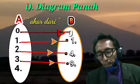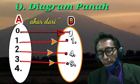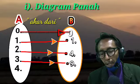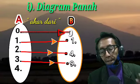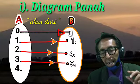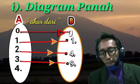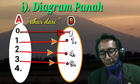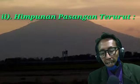Kita mulai dari cara diagram panah. Perhatikan pada tayangan. Kita buat dua himpunan: himpunan A dengan anggota 0, 1, 2, 3, 4 dan himpunan B dengan anggota 0, 1, 4, dan 9. Karena relasinya adalah 'akar dari', maka kita pasangkan: 0 dengan 0 artinya 0 adalah akar dari 0, 1 dengan 1 artinya 1 adalah akar dari 1, 2 dengan 4, dan 3 dengan 9.